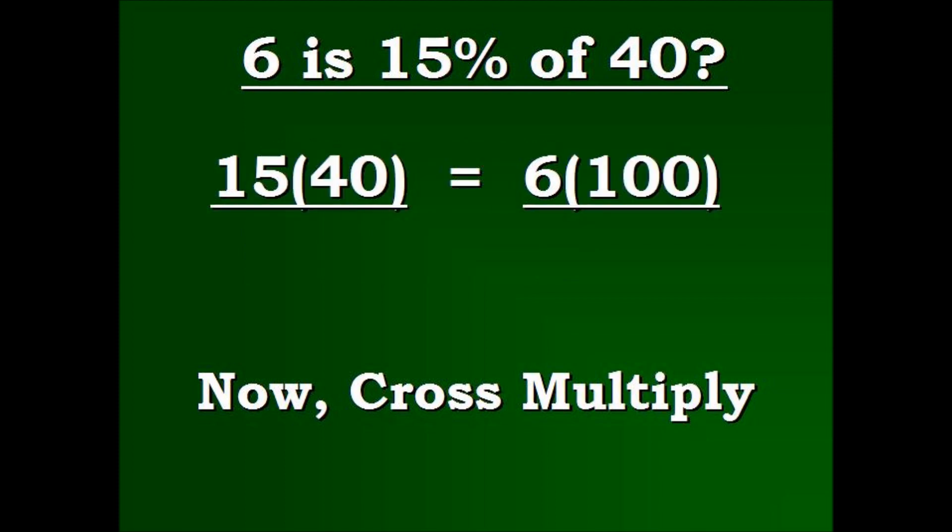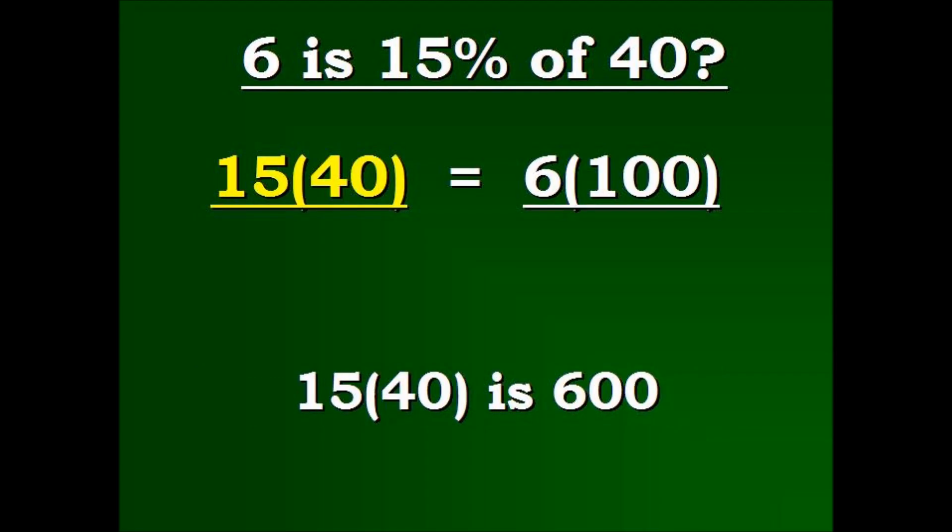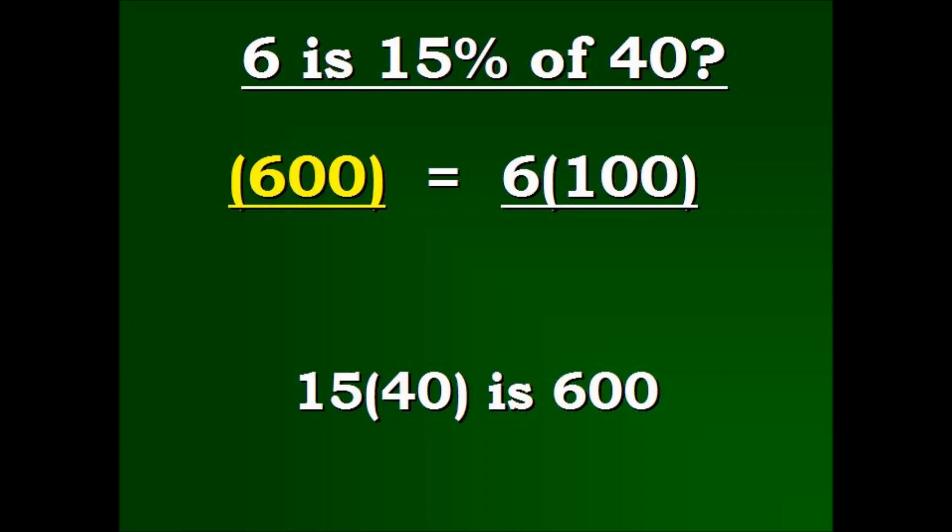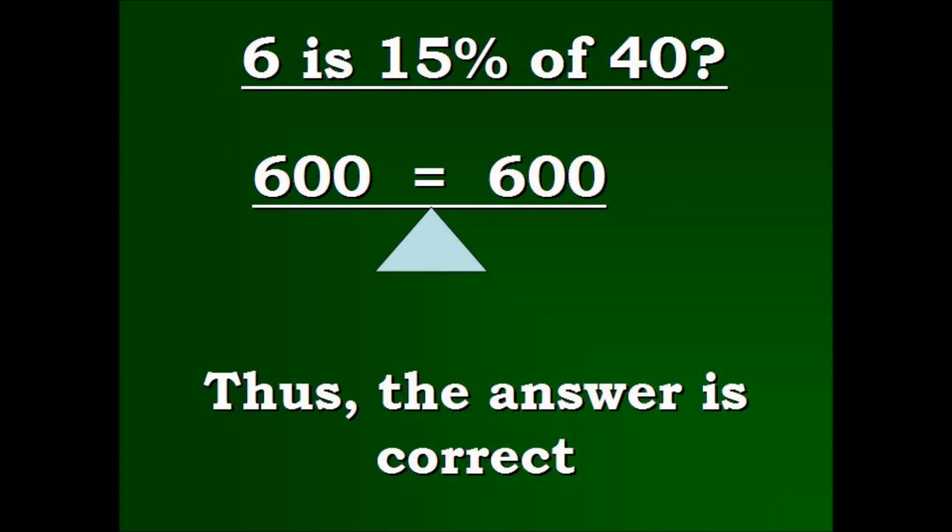Here we have 15 multiplied into 40. 6 multiplied into 100. 15 times 40 is 600. Okay. And 6 times 100 is 600. So, our solution works. The equation is balanced.